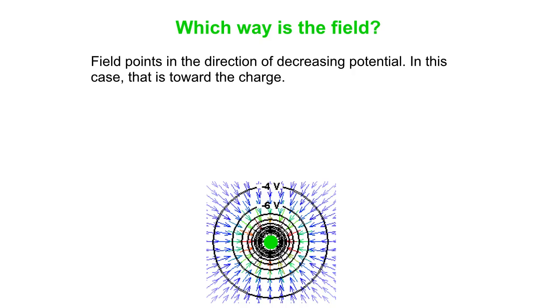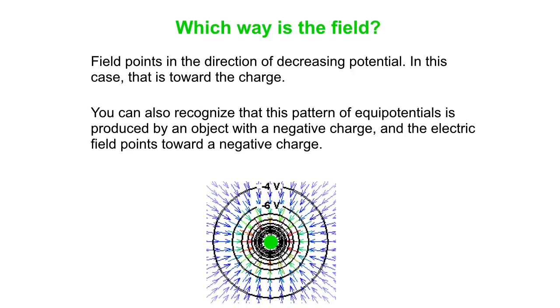Here, again, you can see that the field points in the direction of decreasing potential. You should also recognize that it's the pattern of equipotentials produced by an object with a negative charge, just circles centered on the charge. That electric field points, of course, toward a negative charge. And again, here's our equation.